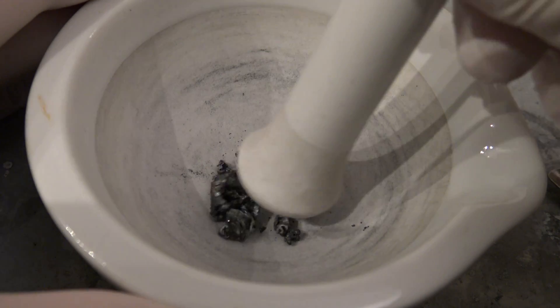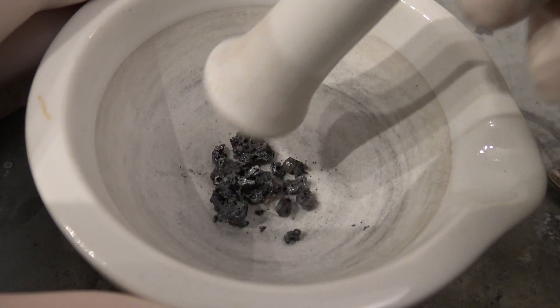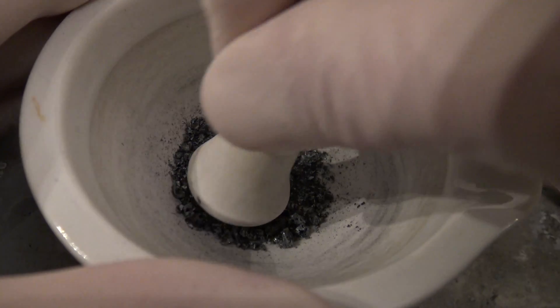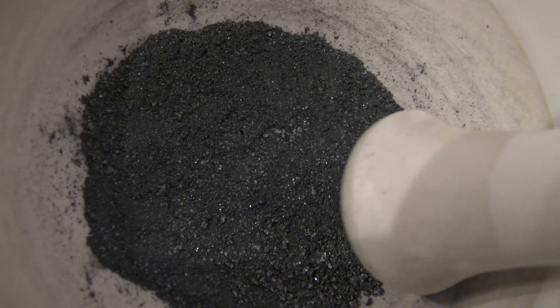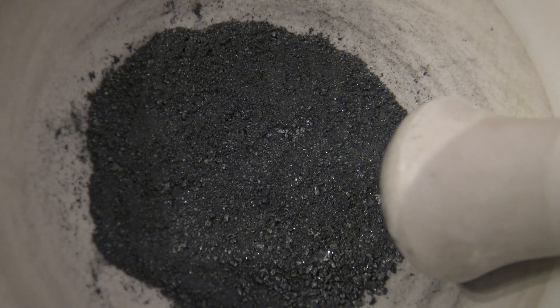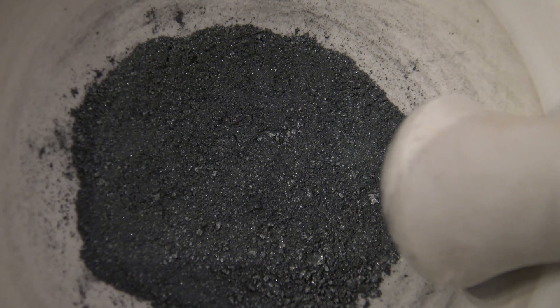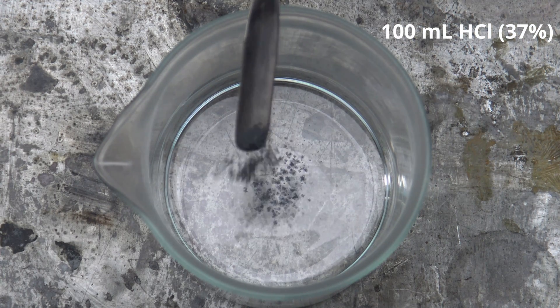After that, it was crushed with a mortar and pestle to increase the surface area, making it easier to react in the next step. Then the product was added to 100 ml of concentrated hydrochloric acid.